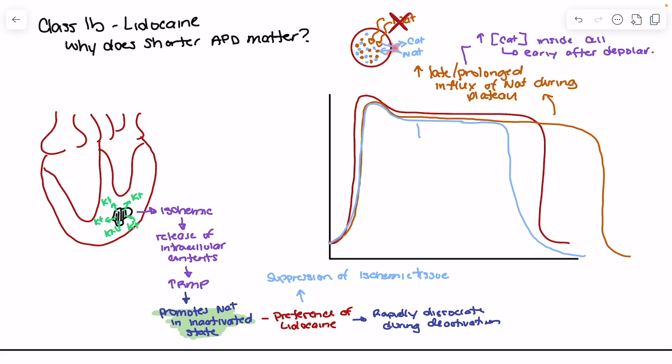A shorter plateau and faster repolarization together have a stabilizing impact on the ischemic tissue membrane and help prevent ectopy. Lidocaine binds in the inactivated state, which ischemic tissue occupies more regularly, suppressing that tissue. Blocking the slow inward current of sodium during the plateau and phase three shortens the plateau and allows for faster repolarization. Those two things together prevent early after depolarization, reducing the likelihood of reentry and ectopy causing ventricular fibrillation or ventricular tachycardia in these patients.